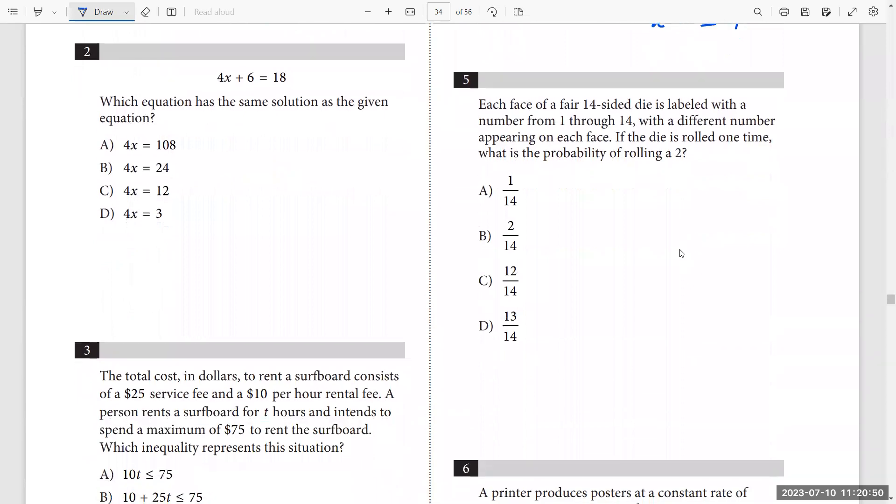Question number two. 4x plus 6 equals 18. Which equation has the same solution as a given equation? So minus 6 minus 6, start by solving. 4x now is equal to 12. I have now 4x as well. It's quite easy.